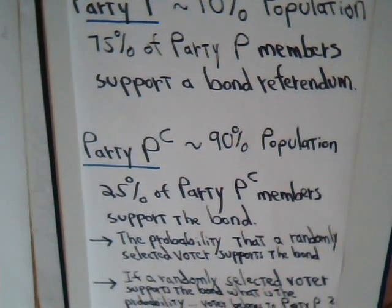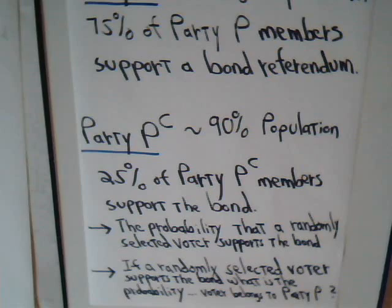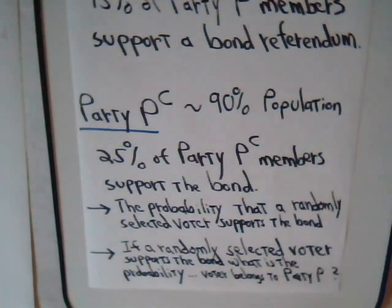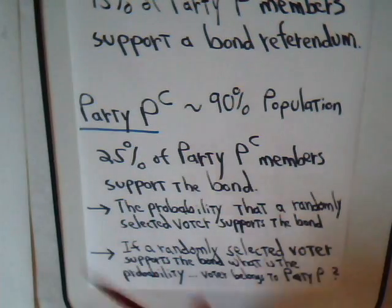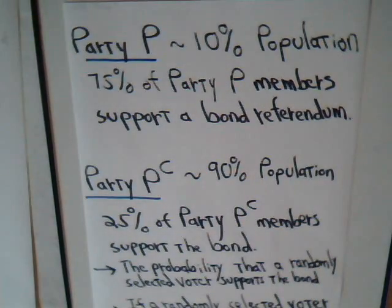There are two questions we want to answer. First, if you randomly select a voter on the street, what is the probability that that voter supports the bond referendum? Second, if you have a randomly selected voter that does support the referendum, what is the probability that that supporter belongs not to the opposition party, but to Party P?